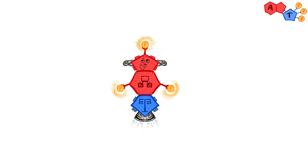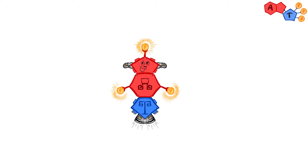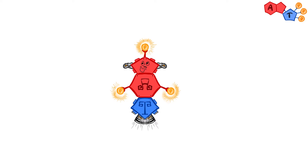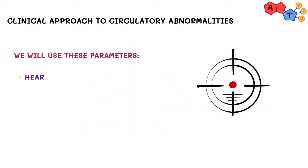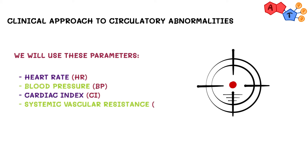Hello everyone. Today we will go more practical and discuss a very important yet challenging topic that will become really interesting once you understand it. This video will give you an idea of how to approach circulatory abnormalities in terms of diagnosis and treatment. For diagnosis we will use these parameters: heart rate, blood pressure, cardiac index, systemic vascular resistance, and JVP, which is a surrogate marker of right-side preload.